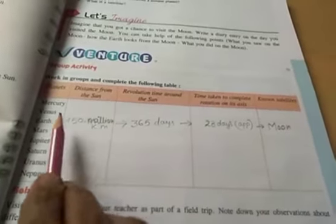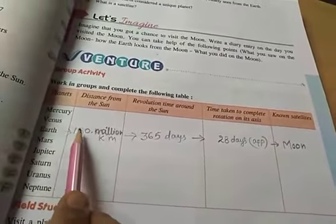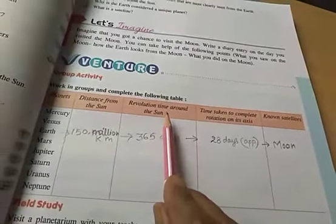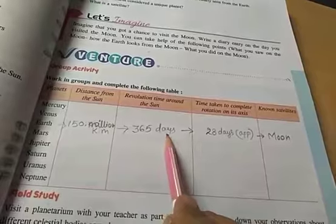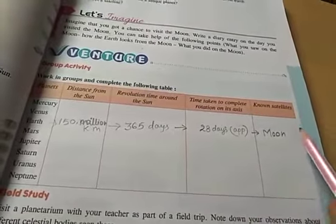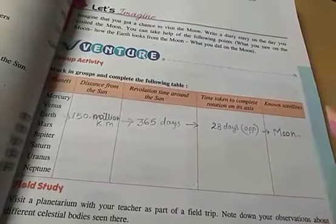All the students, can you understand? I have the knowledge of Earth. 150 million kilometers distance from the sun. Revolution time - 365 days. Rotation time - approximately 28 days. Known satellite - moon. One of its natural satellites is the moon.